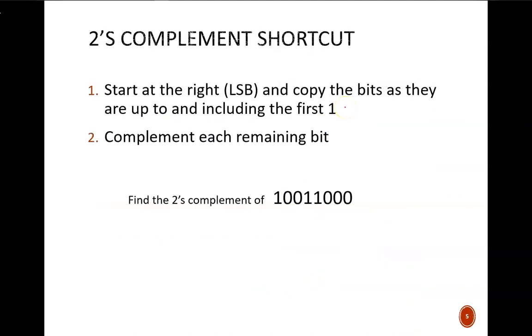There is a shortcut that many people prefer when performing the two's complement operation. Working from the least significant bit, i.e., from right to left, copy over all the bits up to and including the first one. Beyond that one, complement each bit individually. In this example, the first 4 bits remain the same, and the remaining 4 bits are all flipped.